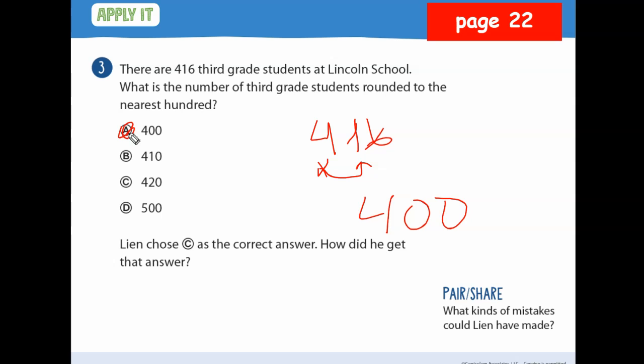Now, Lynn chose C. She chose that. Did she get it right? No. If she chose 420, what place was she rounding it to? She was rounding to tens, not hundreds.